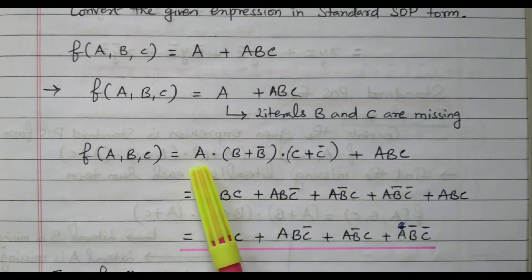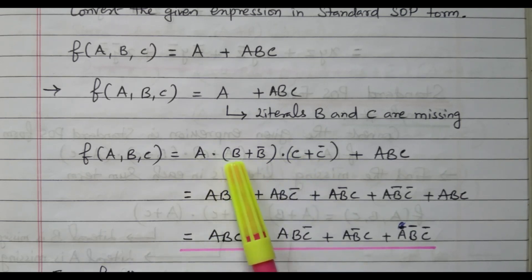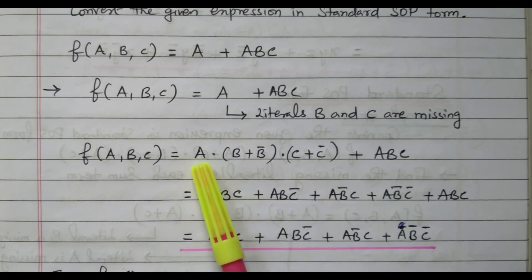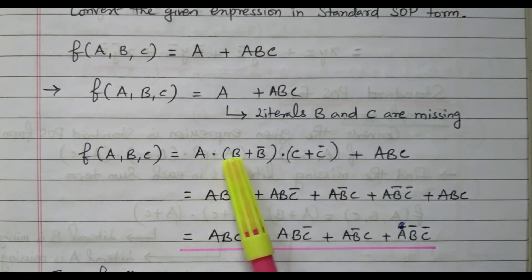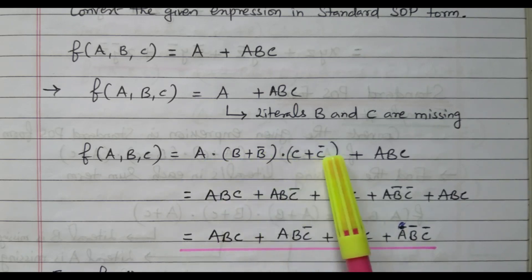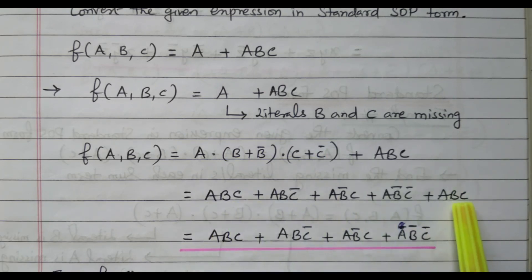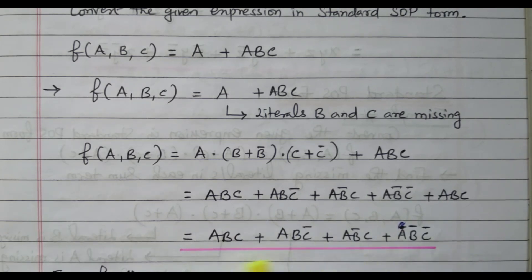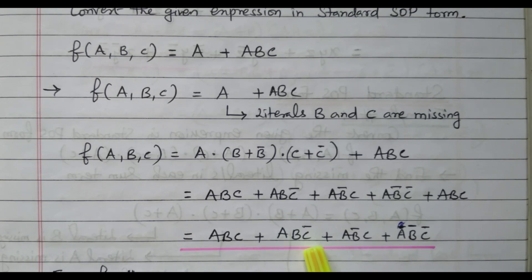We multiply A with (B + B̄)(C + C̄). Expanding: ABC + ABC̄ + AB̄C + AB̄C̄. Plus the second original term ABC. Now ABC appears two times, so we omit one. The remaining terms are: ABC + ABC̄ + AB̄C + AB̄C̄. This is the standard SOP form — four product terms, and in all four product terms all literals A, B, C are available, either in normal or complemented form. That is called a standard SOP form.